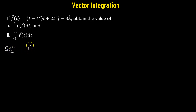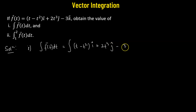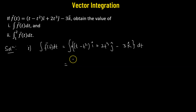In Part 1, all we have to do is obtain the integral of f(t) dt. That will be equal to the integral of the vector (t minus t squared) i-cap plus 2t cubed j-cap minus 3k-cap, integrated with respect to t.